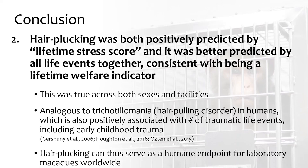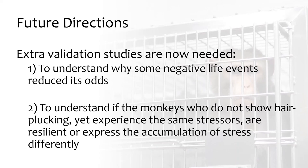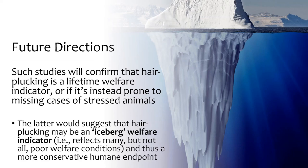Hair plucking can therefore serve as a humane endpoint for laboratory macaques worldwide. In my sample, it suggests the 45% who displayed it should be retired from research. Extra validation studies are needed to understand why some negative life events reduced its odds, and to determine whether monkeys who don't show hair plucking yet experience the same stressors are truly resilient or express accumulated stress differently. It is possible that hair plucking may instead be an iceberg welfare indicator — reflecting many but not all poor welfare conditions — which would still be extremely useful, especially in conjunction with other humane endpoints.